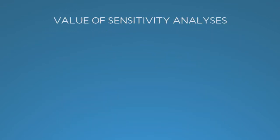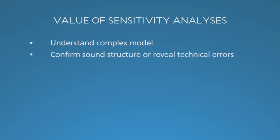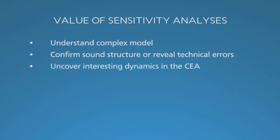Sensitivity analyses do more than just quantify the impact of uncertainty in model input values — they help the analyst understand a model that can get pretty complex. If results change in predictable ways as input values are widely varied, this is evidence of the model's sound structure. Conversely, unexpected patterns may reveal technical errors, and occasionally such unexpected results uncover interesting dynamics. One example from our work is when the cost of antiretroviral therapy for HIV didn't affect results because it appeared appropriately in two offsetting parts of the model.